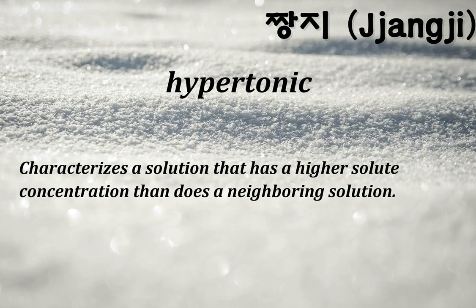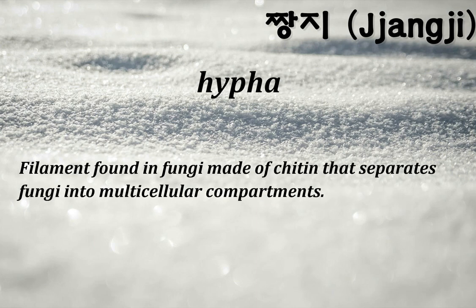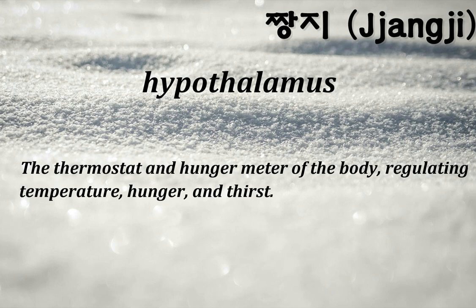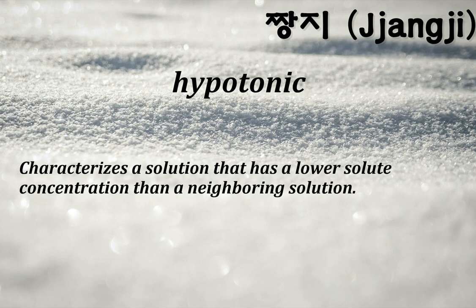Hypertonic: characterizes a solution that has a higher solute concentration than a neighboring solution. Hypha: a filament found in fungi made of chitin that separates fungi into multicellular compartments. Hypoblast: forms the yolk sack, which produces the embryo's first blood cells. Hypothalamus: the thermostat and hunger meter of the body, regulating temperature, hunger, and thirst. Hypotonic: characterizes a solution that has a lower solute concentration than a neighboring solution.